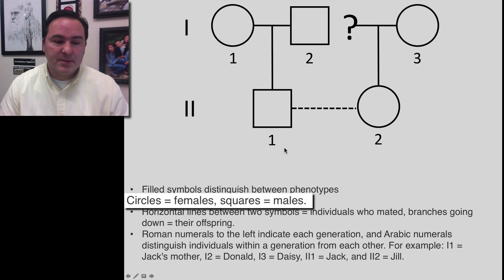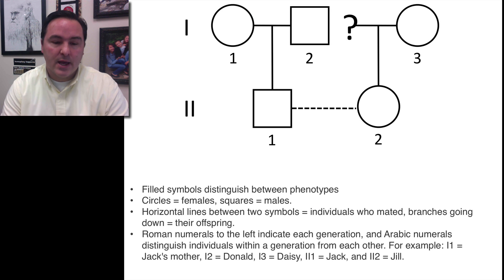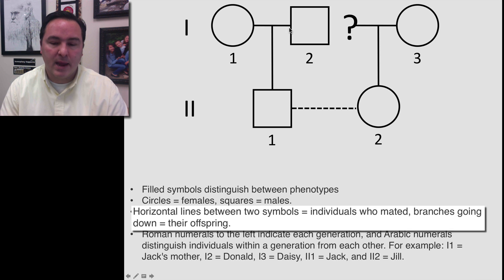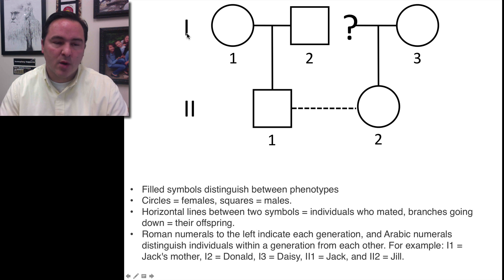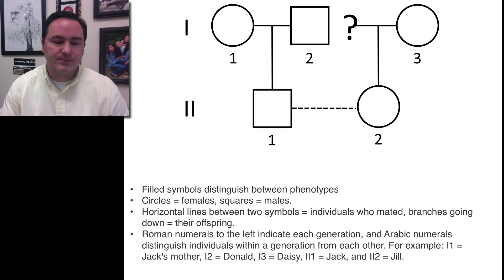We typically use circles for females and squares for males. The horizontal line indicates that individuals are mating. The notation uses Roman numerals to indicate the rows or generations, and then the number of individuals in each of the rows.